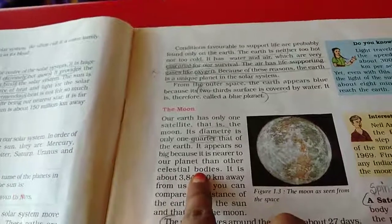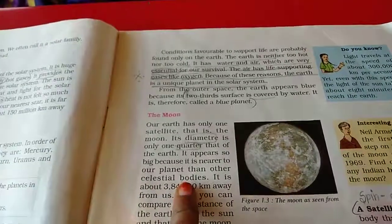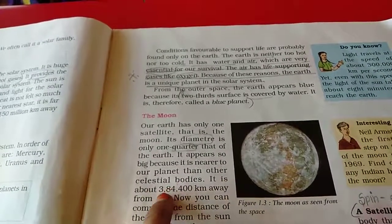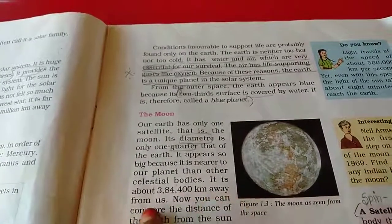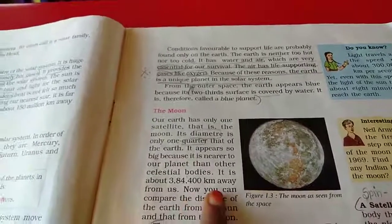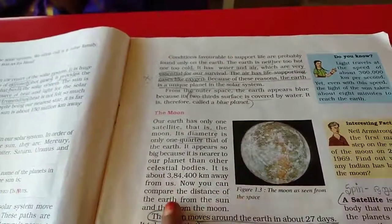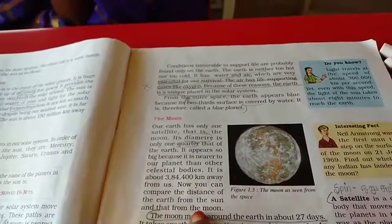Celestial bodies means... It is about 3,084,400 km away from us. Now, you can compare the distance of the earth from the sun and that from the moon.